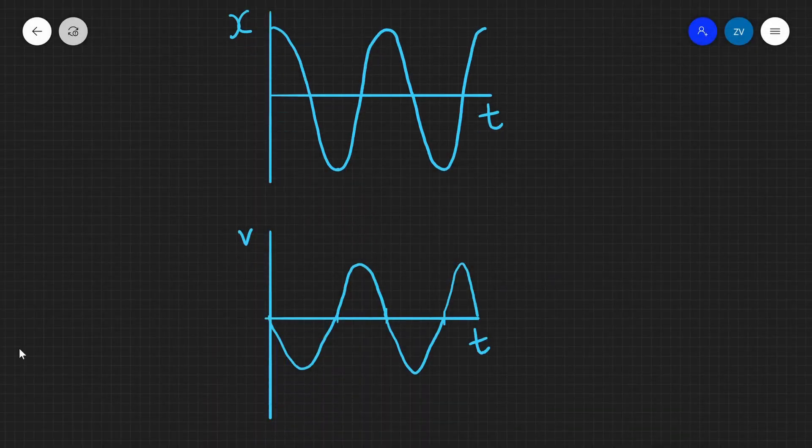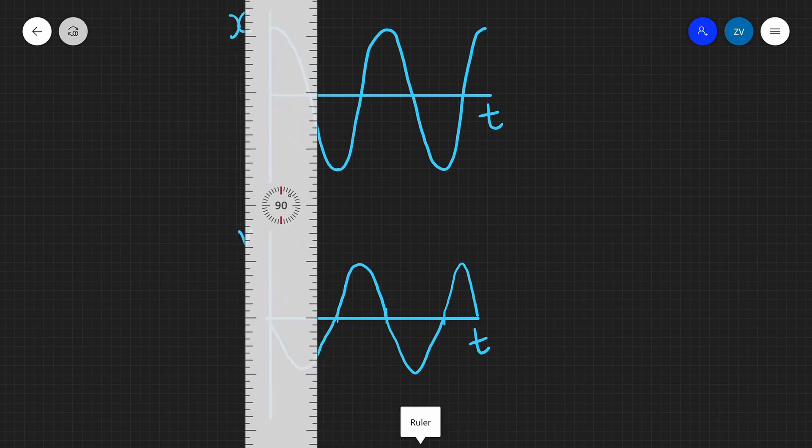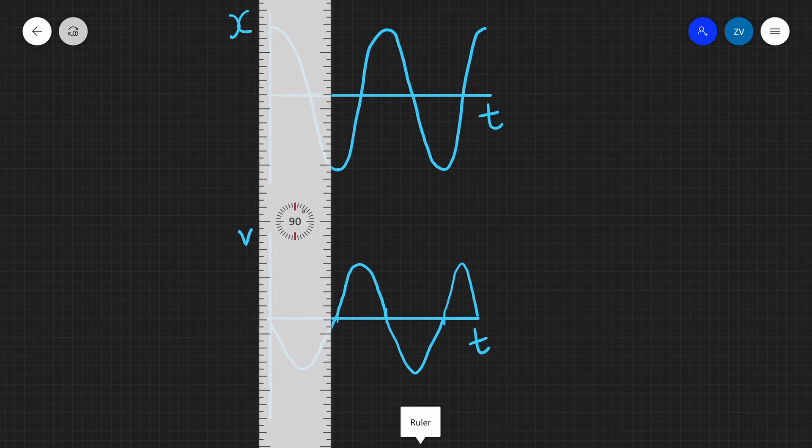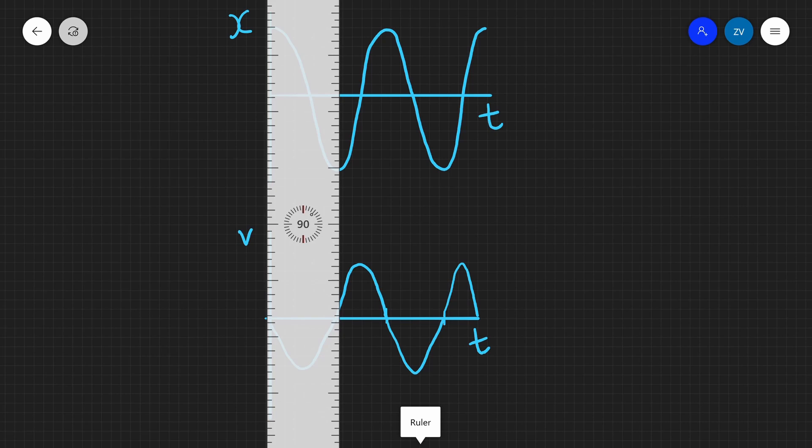Notice a couple of things. For instance, whenever the x against t graph has a maximum, a peak or a minimum, a trough, then the v against t graph is actually equal to zero. For example, right at this spot, over here, we have a peak and the velocity is equal to zero. That corresponds to an object performing simple harmonic motion being furthest away from the equilibrium position.